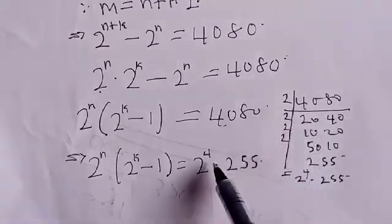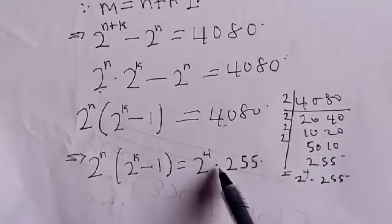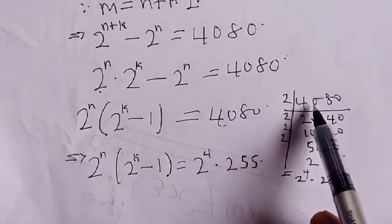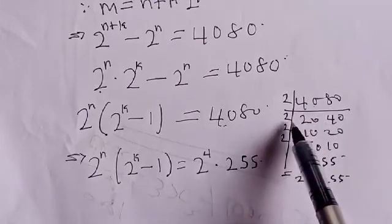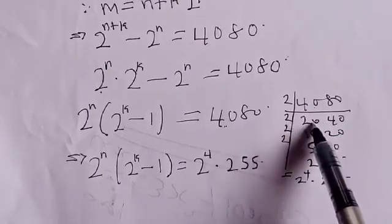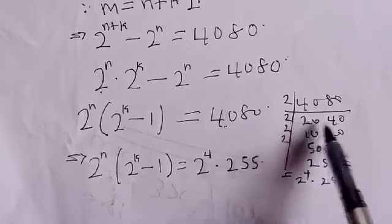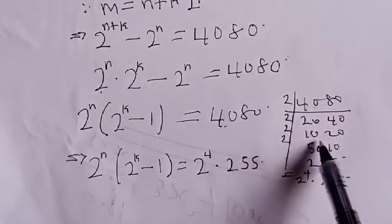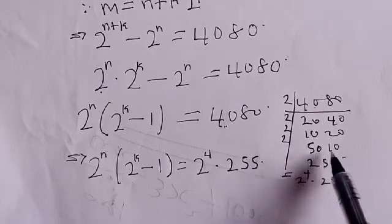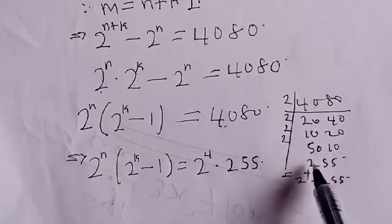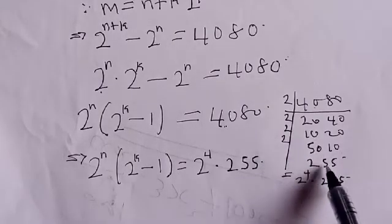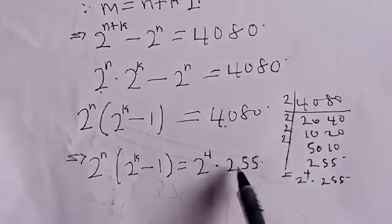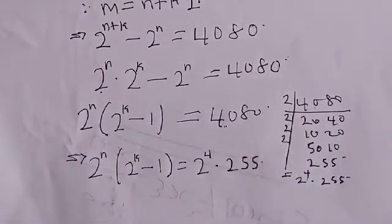To confirm: 2 goes into 4080 to give 2040; 2 goes into 2040 to give 1020; 2 goes into 1020 to give 510; 2 goes into 510 to give 255; and 2 cannot go into 255 again. So we have 2 raised to power 4 multiplied by 255.